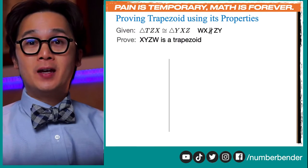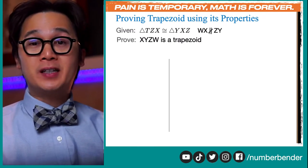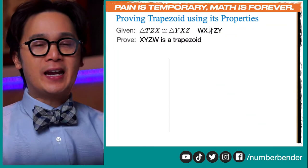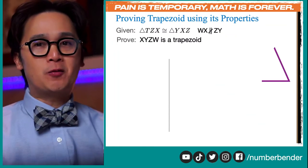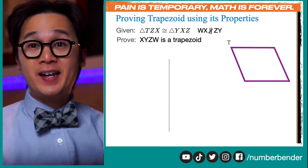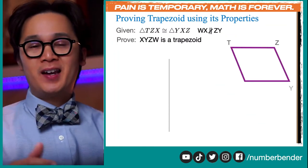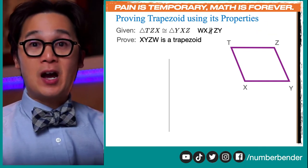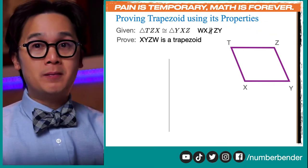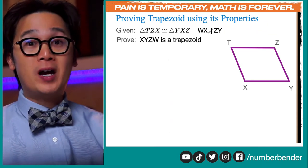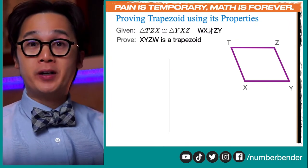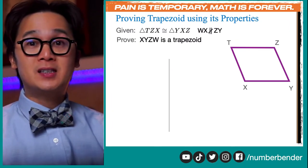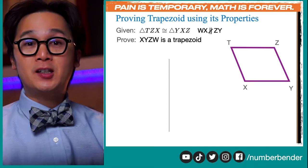We are given trapezoid XYZW, and we need to prove that it is indeed a trapezoid. This quadrilateral is kind of looking like a rhombus, but according to this problem it is a trapezoid, and our task is to prove that this is indeed a trapezoid.